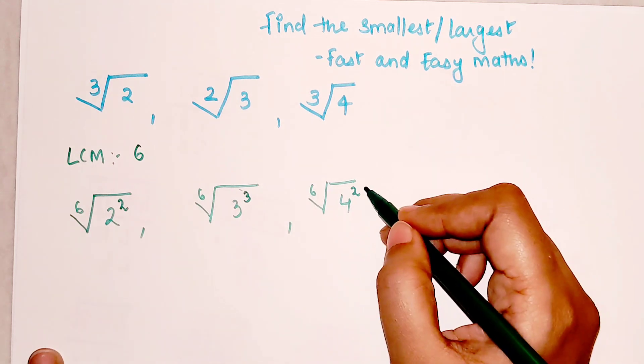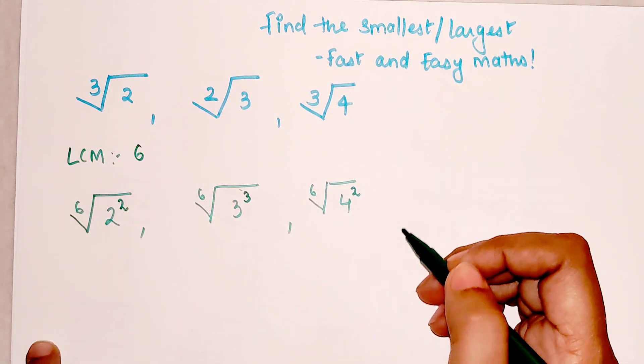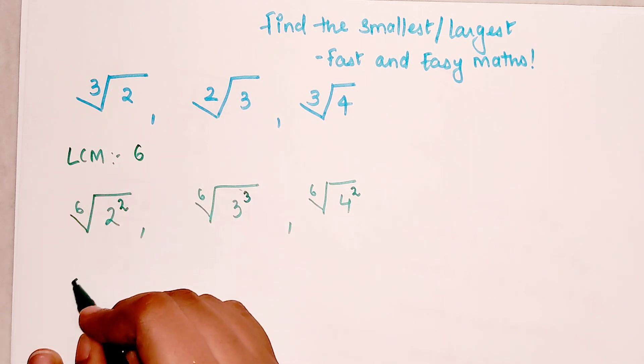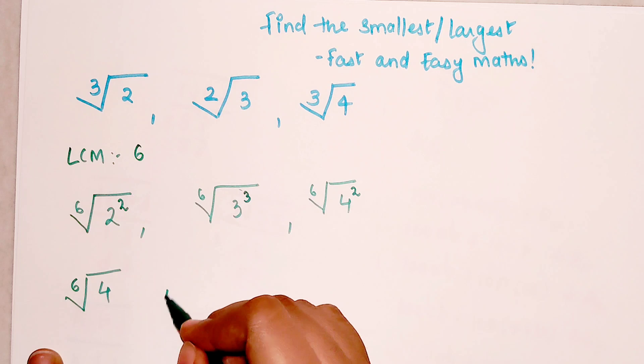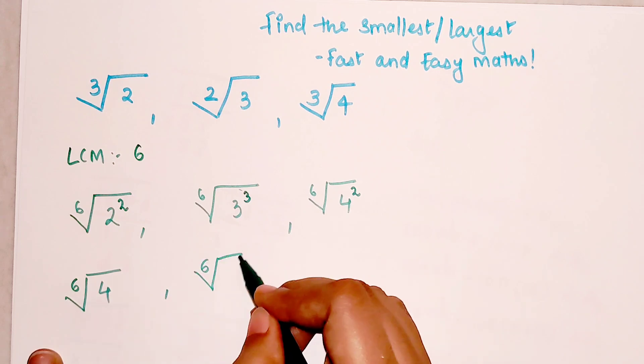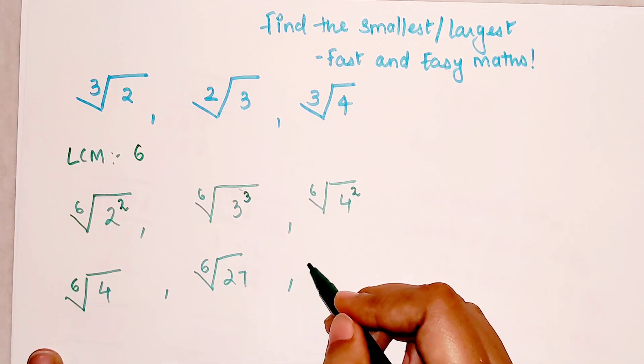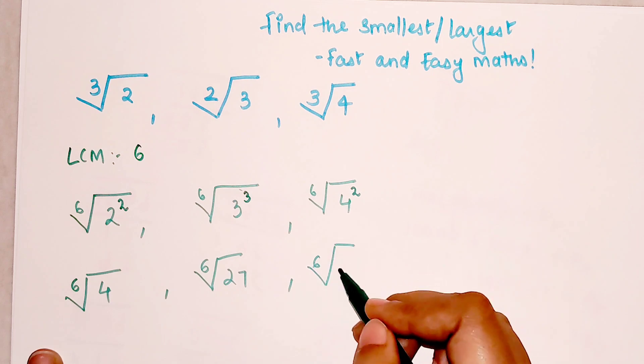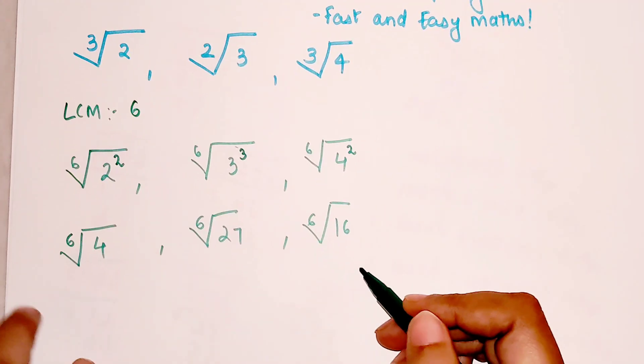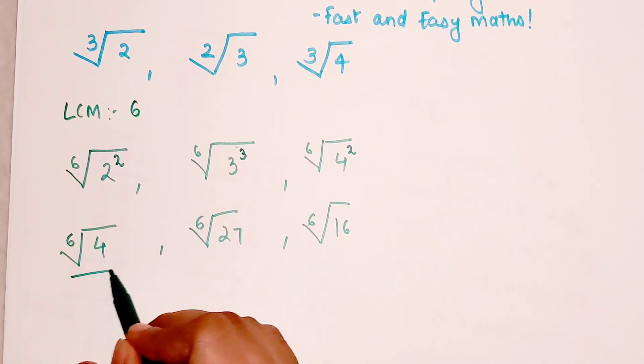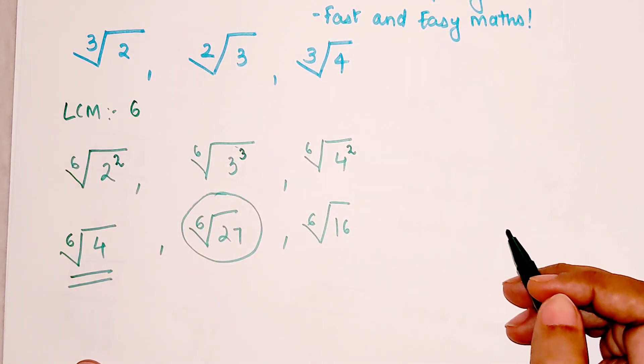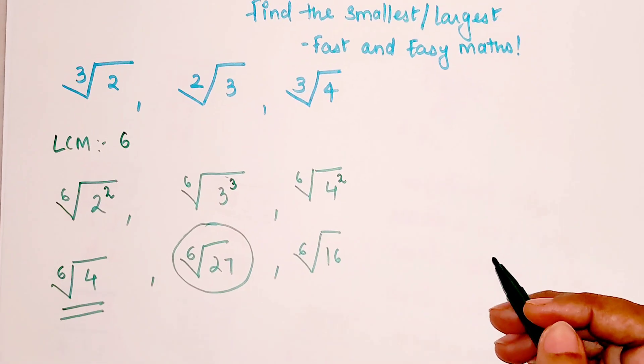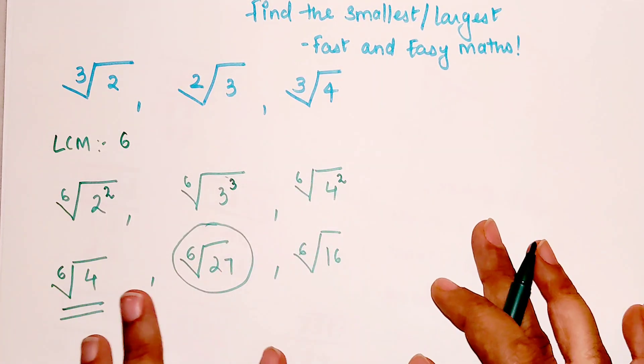So 2 becomes the index for 4. Now since all of them are with the 6th root, we can directly do this: 6th root of 4, 6th root of 27, and 6th root of 16. From here I can say that this one is the smallest and this one is the largest.